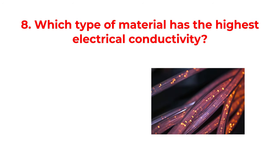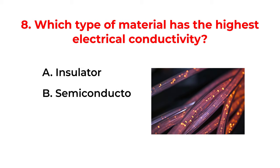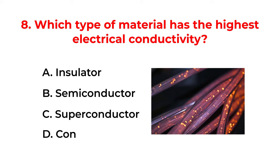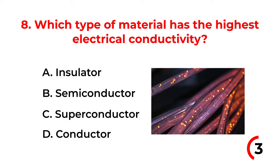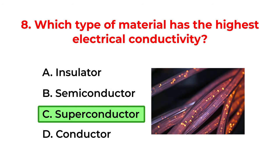Which type of material has the highest electrical conductivity? A. Insulator. B. Semiconductor. C. Superconductor. D. Conductor. The correct answer is option C: Superconductor.